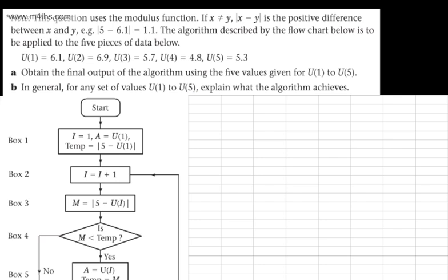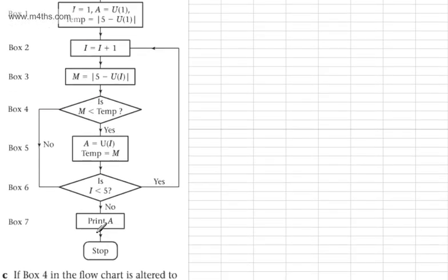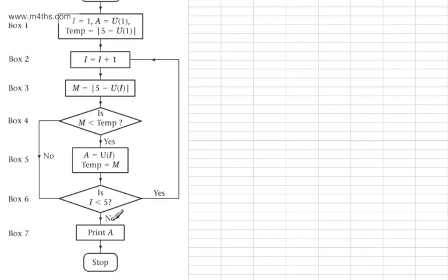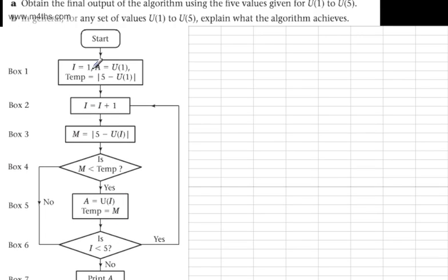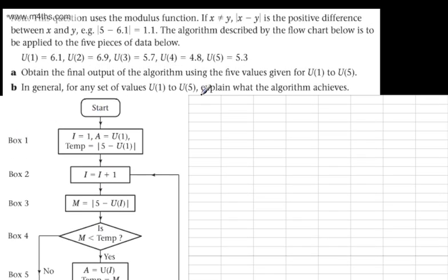Let's look at our flowchart. We've got a start and a stop, both with rounded edges to the rectangle. We can see rectangles and diamonds. Rectangles give us instructions, and diamonds ask us to make a decision — decision diamonds, D and D. What I'm going to do in my first column is write down the box number, so I'm keeping track of what I'm doing.